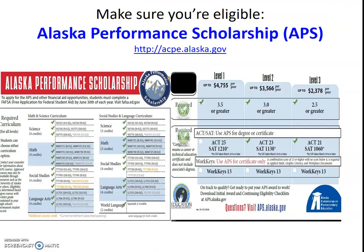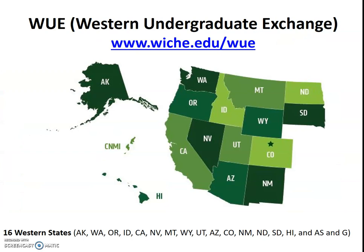Make sure you're eligible for the Alaska Performance Scholarship — you can check that in PowerSchool under the APS checklist for students. Double-check that you've met the curriculum requirements. There are GPA requirements and SAT, ACT, or WorkKeys scores specific to each level of aid. You'll also need to fill out the FAFSA to be eligible for the APS.